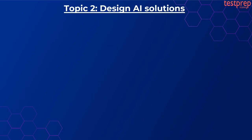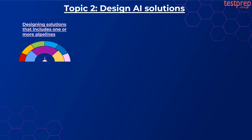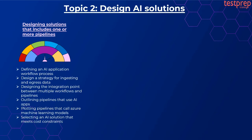Topic two: Design AI solutions. Number one, designing solutions that include one or more pipelines. It contains six subtopics: first, defining an AI application workflow process; second, designing a strategy for ingesting and egress data; third, designing the integration point between multiple workflows and pipelines; fourth, outlining pipelines that use AI apps; fifth, plotting pipelines that call Azure machine learning models; sixth, selecting an AI solution that meets cost constraints.